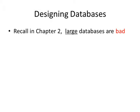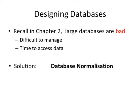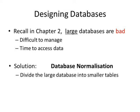We recall in chapter 2 that large databases are bad because they are difficult to manage and can take quite a lot of time to access. The solution we learned in chapter 2 is to perform database normalization, where we divide the large database into smaller tables. Each table is related to other tables so that they can be easily accessed.